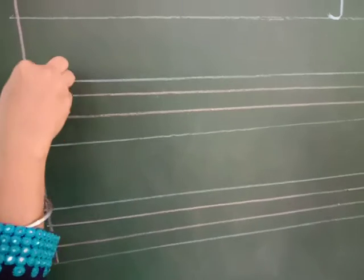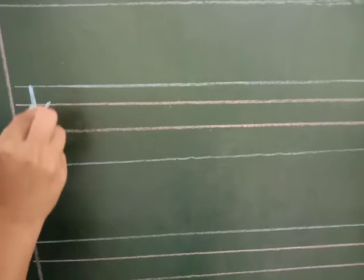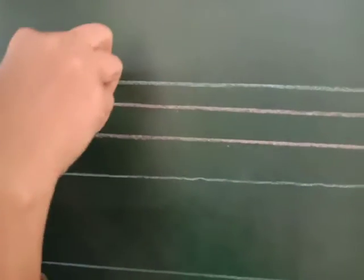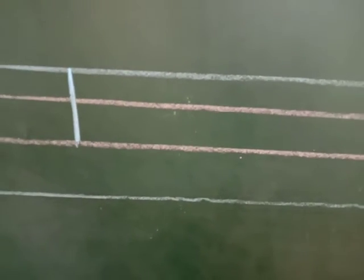Next letter is small k. Standing line in three lines. But small k you have to write in the middle two lines — standing line, slanting line, slanting line. It becomes small k. Small l — it's very easy: just a standing line. Small l.